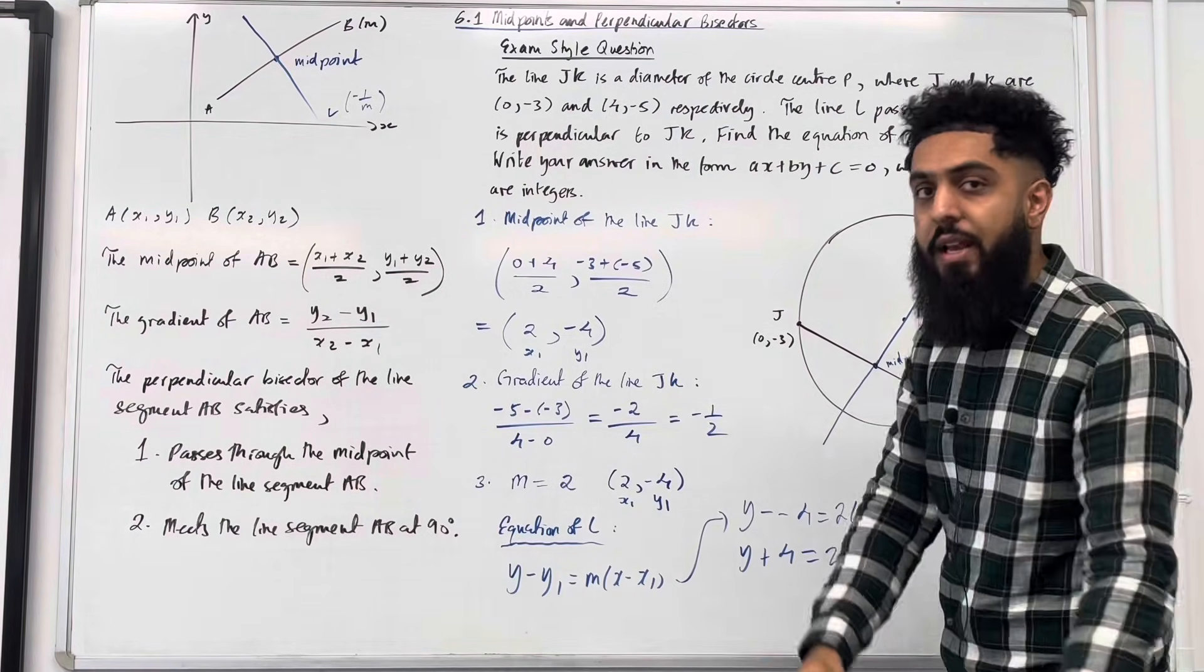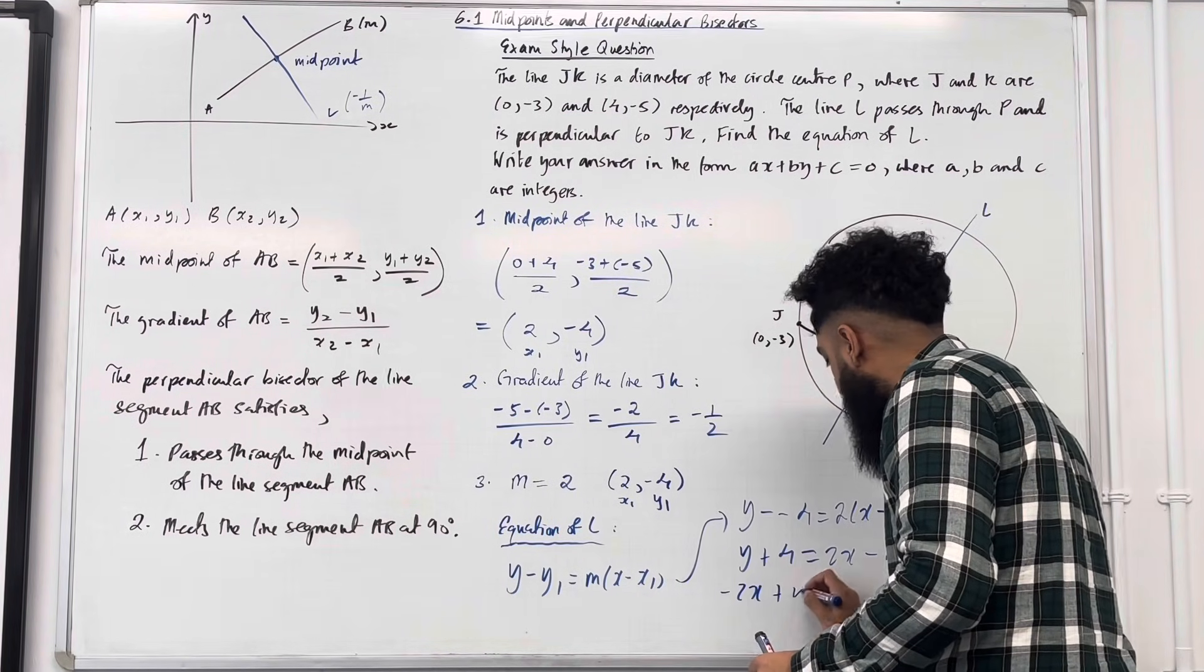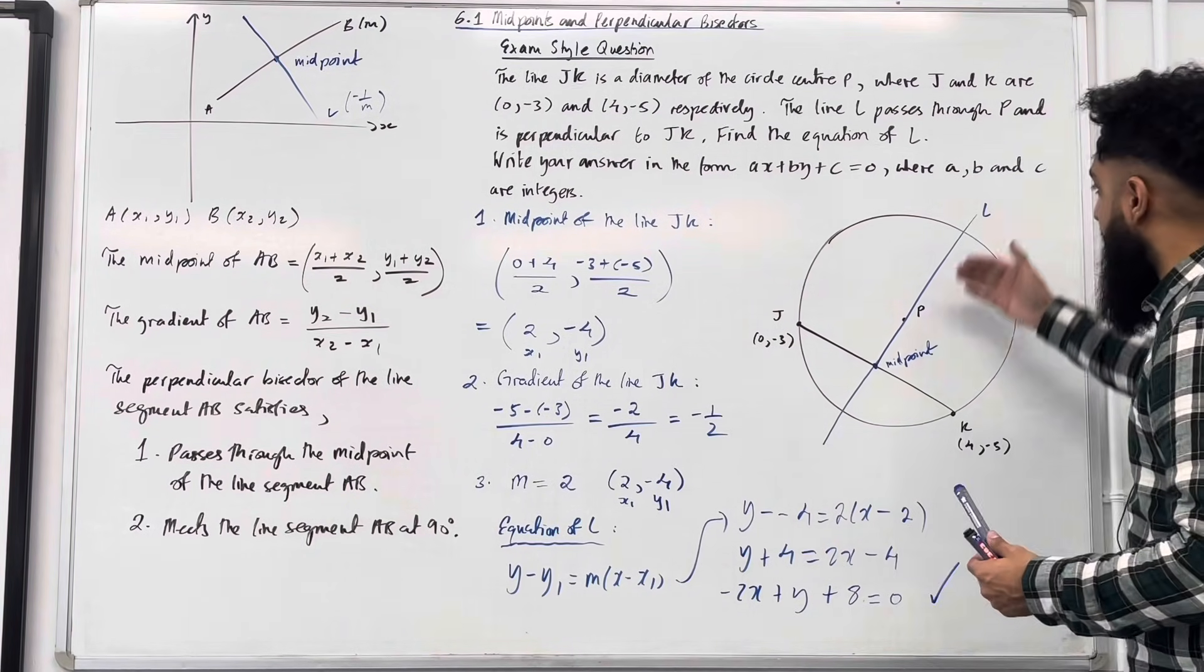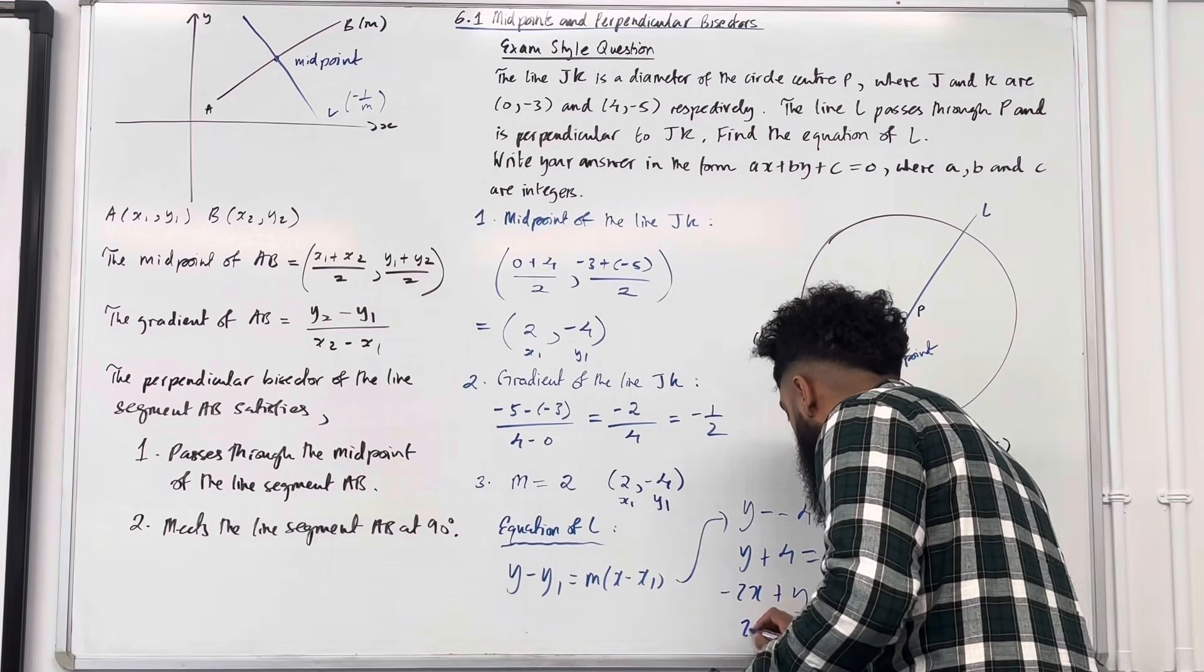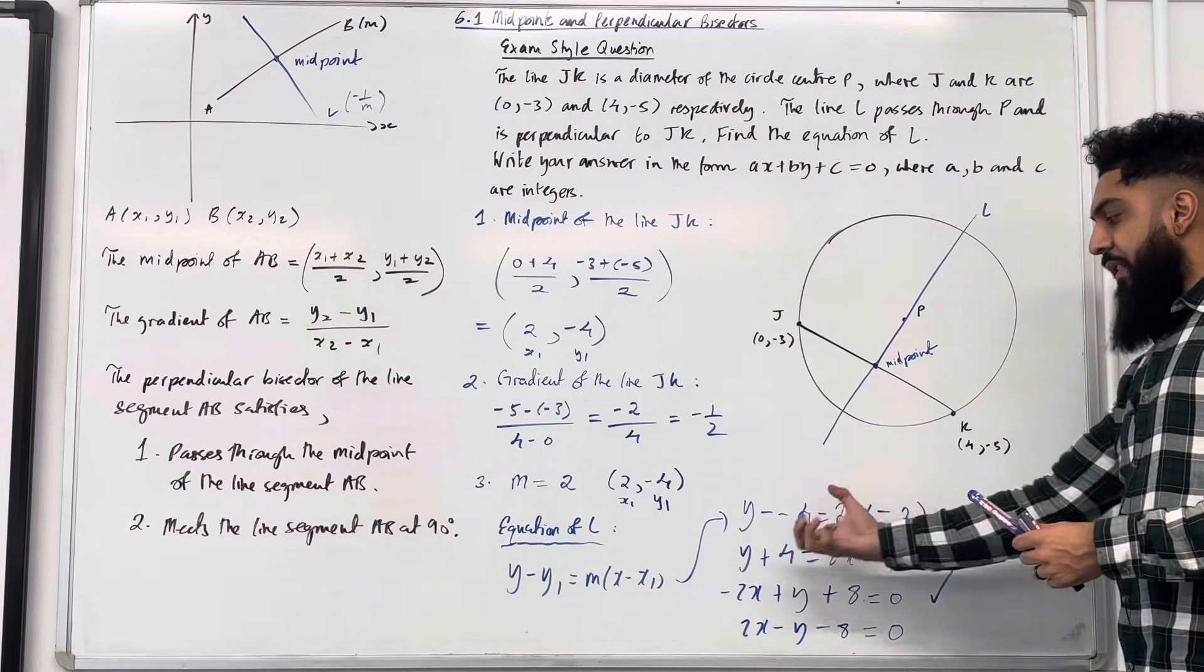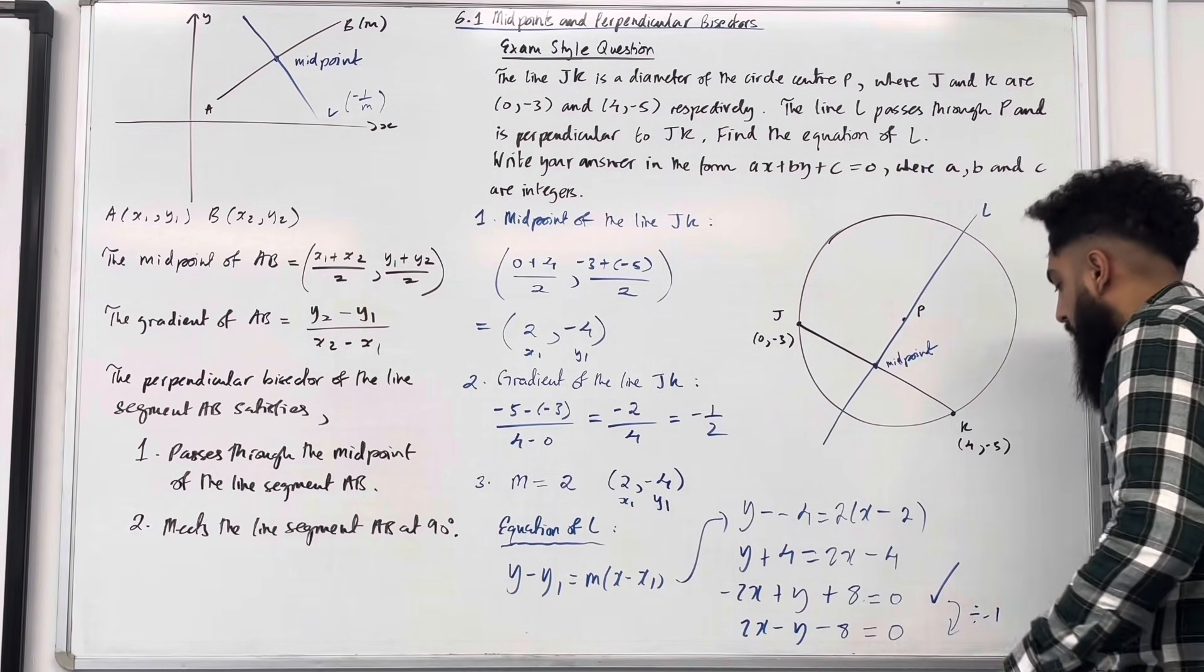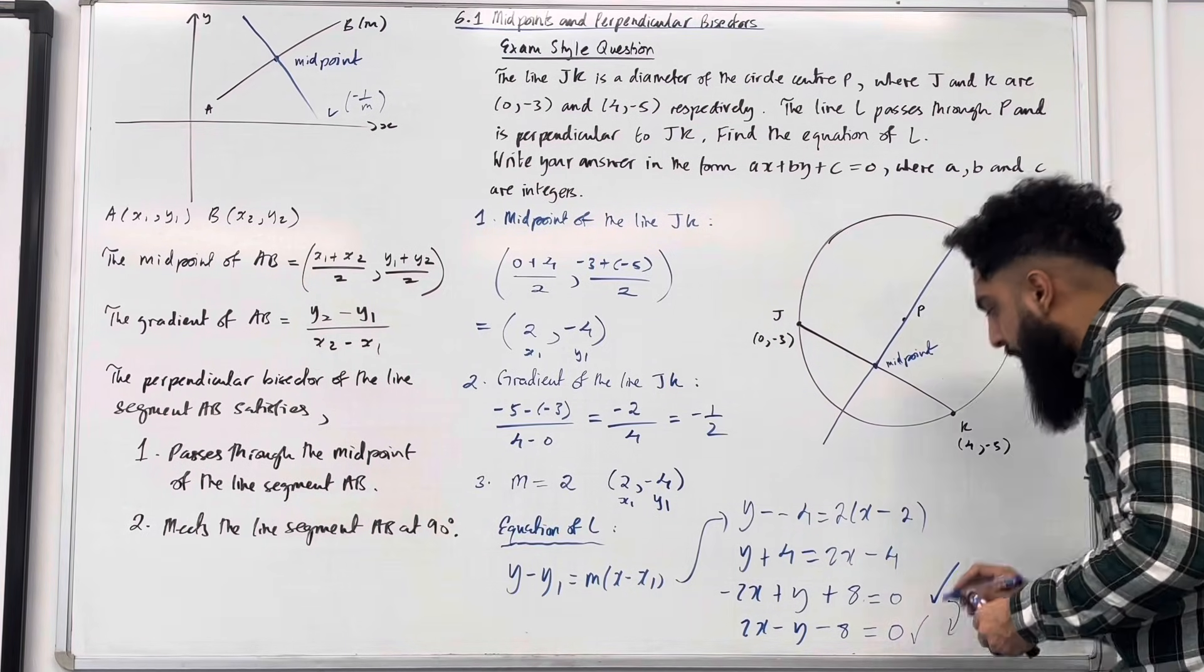I'm going to take everything to the left hand side. I've got minus 2x plus y plus 8 equal to 0. That there is my final answer. This here is the equation of the line L. An equivalent answer would just be 2x minus y minus 8 equal to 0 if you were to take everything to the right hand side or divide this whole equation by negative 1. This answer is correct. This answer is also correct. They're both equivalent answers.